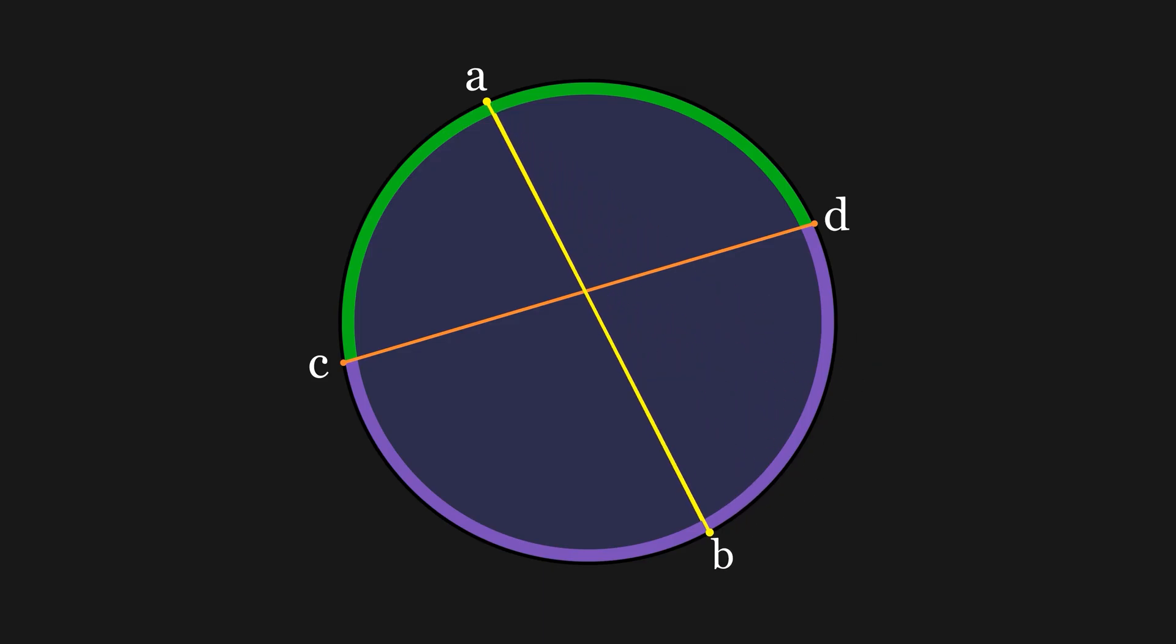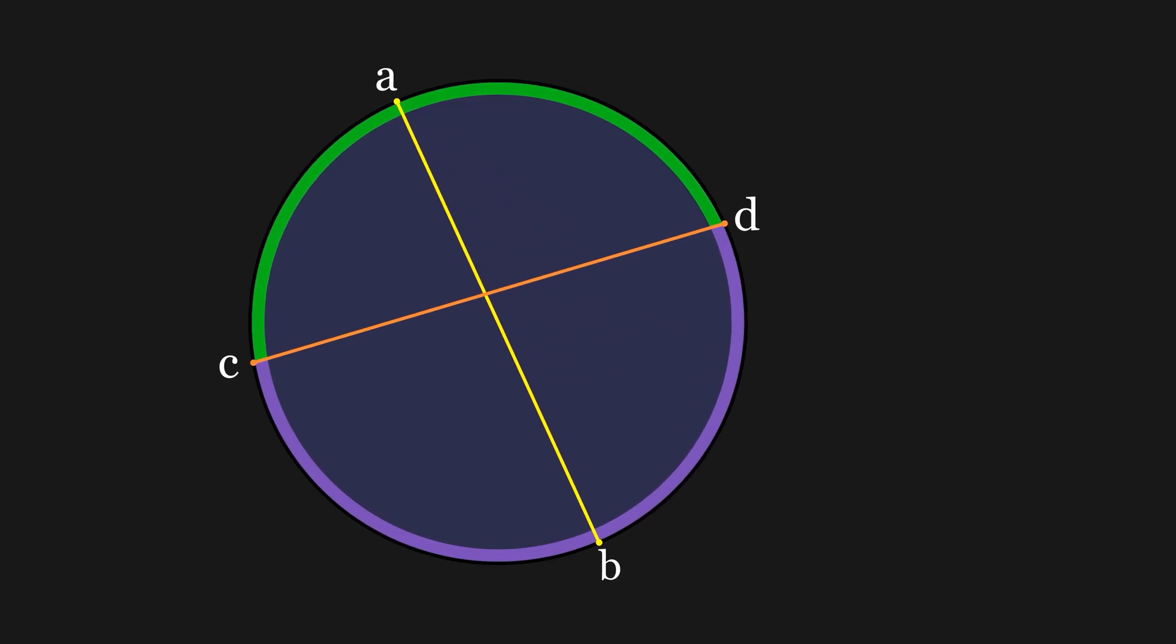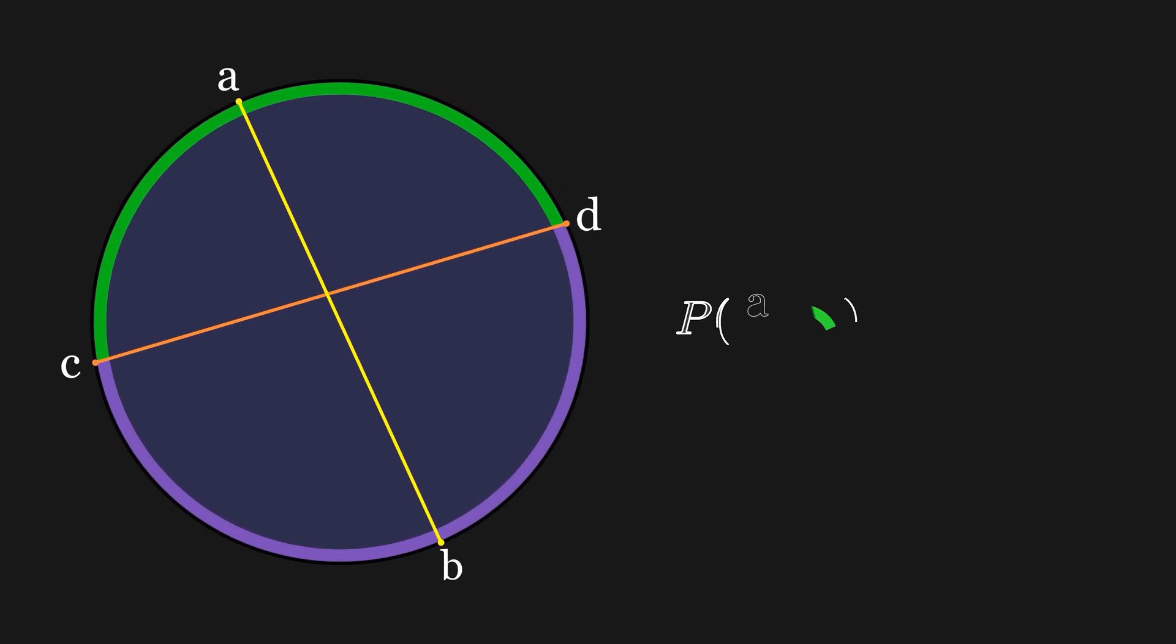So what's the probability that A lies on the green arc? Since each point on the circumference is equally likely, the probability is just the ratio of the green arc length to the circle's circumference. We'll call the green arc length S and the circumference will be 1. Then our probability simplifies to just be S. The length of the purple arc is 1 minus S, so the probability that point B lands on the purple arc will be 1 minus S.